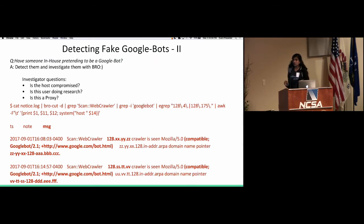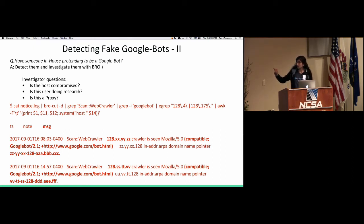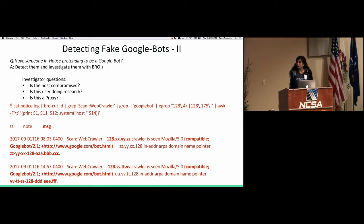The same technique can detect internal scanners faking to be Googlebot. If you egrep for IP ranges in your range, you can see internal IP addresses faking to be Googlebot. Most of the time when we contact those users, they say they're doing it for research purposes — we have a lot of students taking data mining classes, and in their projects they have to mine data across the internet. Usually they get blocked, so they use a googlebot user agent to avoid being blocked.